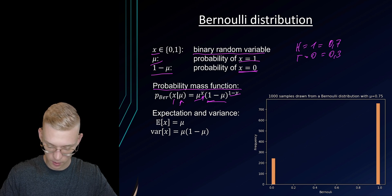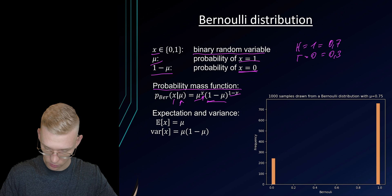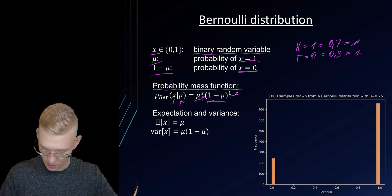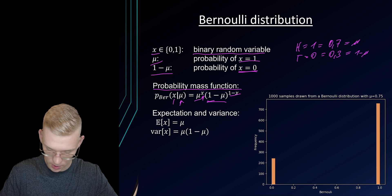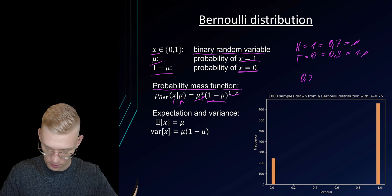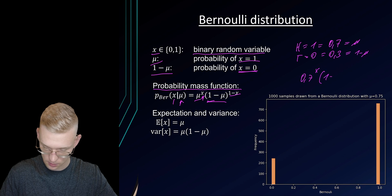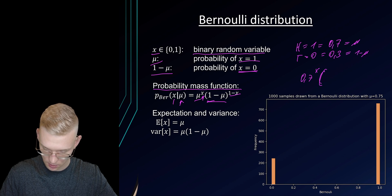So now we can say this is our mu and this is our 1 minus mu and we get 0.7 to the power of x times 0.3 to the power of 1 minus x.